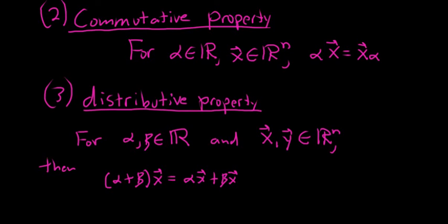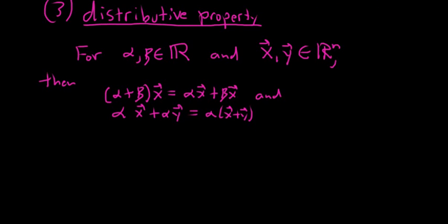And if you have alpha x plus alpha y, that's alpha times (x plus y). So it distributes very nicely, just like a real number would.